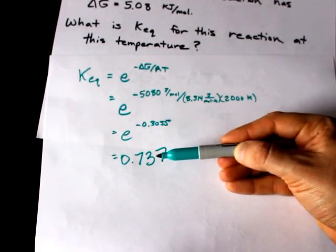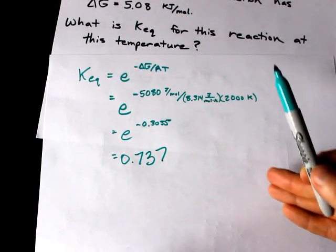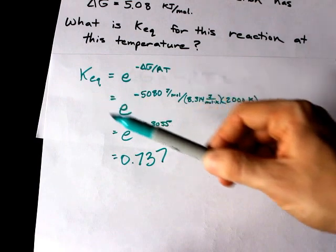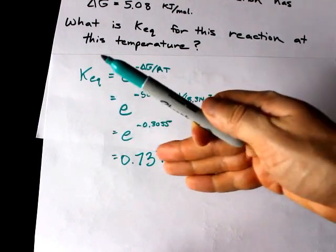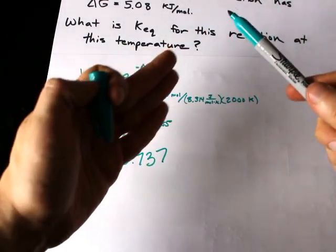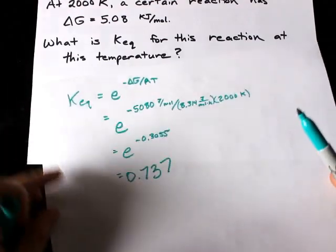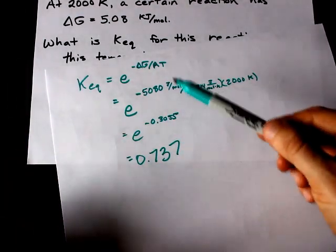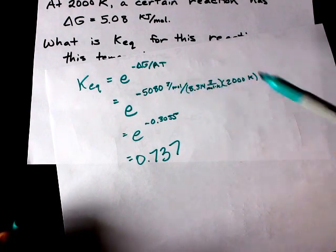0.737 which kind of makes sense, because for a positive delta G the reaction is non-spontaneous and in general KEQs that are less than 1 favor the reactants — they are less likely to go forward. So KEQ and delta G do relate to each other via this equation and it is pretty easy to interconvert the two.